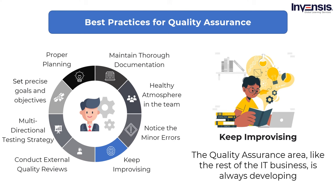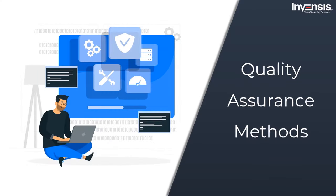So those were some of the best practices for quality assurance. Now let us move on to our next topic and talk about the different methods in which quality assurance is carried out. Quality assurance utilizes one of the following methods: failure testing, statistical process control, total quality management, and models and standards. There are many other methods, but we will be primarily talking about these four methods in today's session.